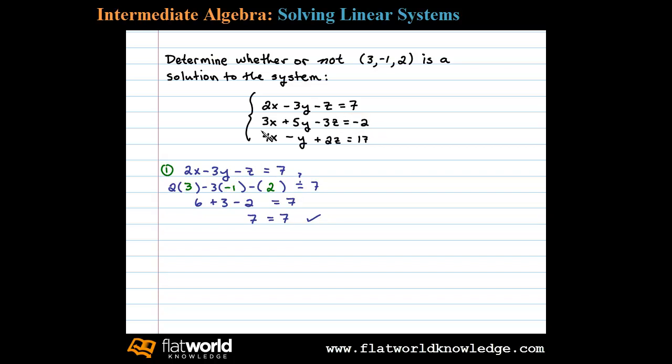Now let's look at the second equation. Again, we'll substitute 3 in for x, -1 in for y, and 2 in for z. In this case, we get 9 - 5 - 6, and we need to see if that equals -2. Sure enough, it does, and the ordered triple satisfies the second equation.